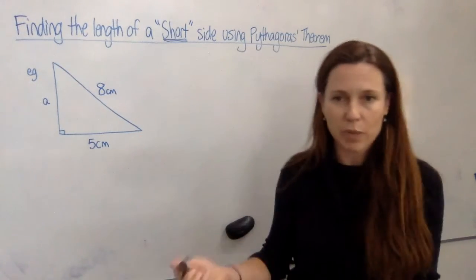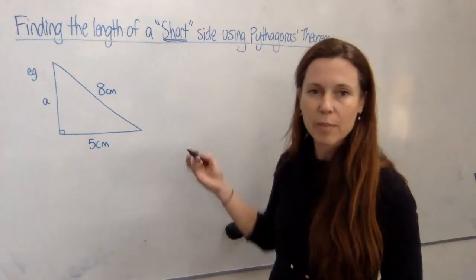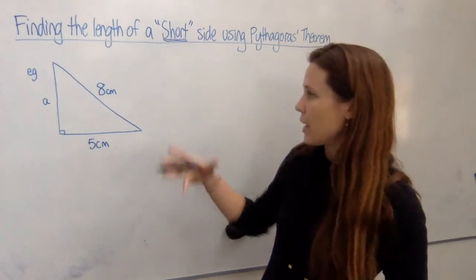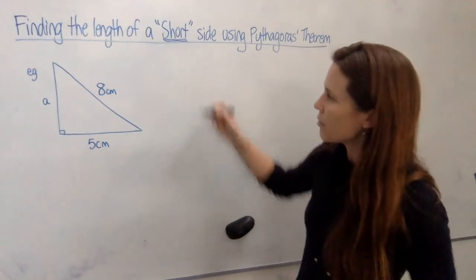So the procedure is pretty much the same as what we did when we found the hypotenuse. It's just the working comes out slightly different because we have our unknown on the same side of the equation as something else. Let's have a look at what happens.